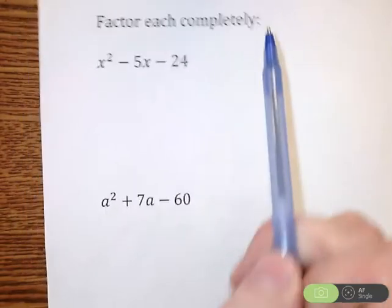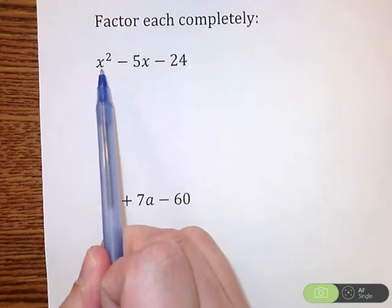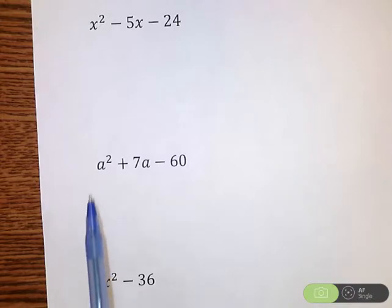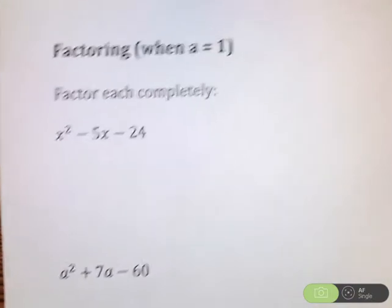What that means is when the number in front of the squared terms, we have x squared, say a squared and x squared, all the leading coefficients are 1.